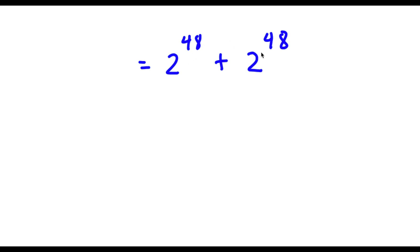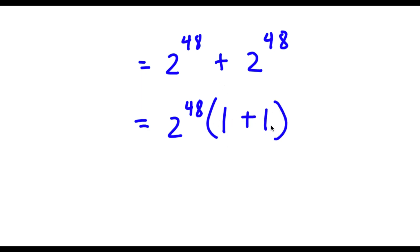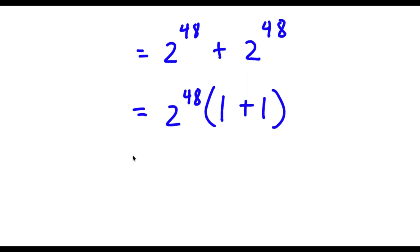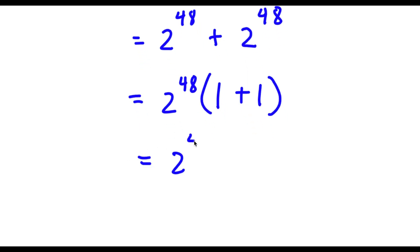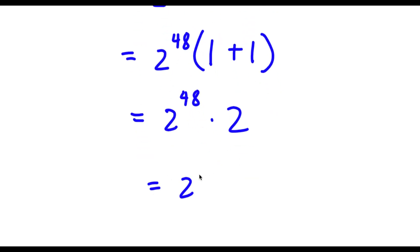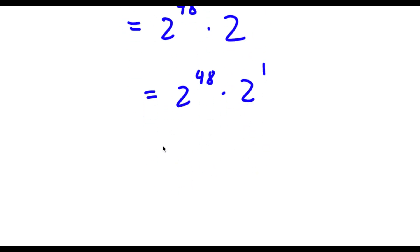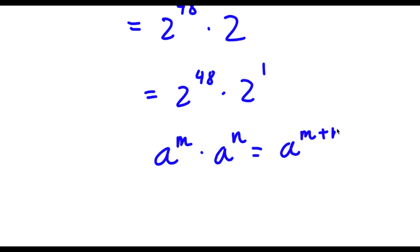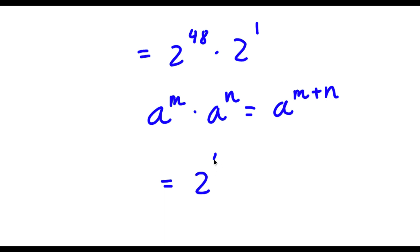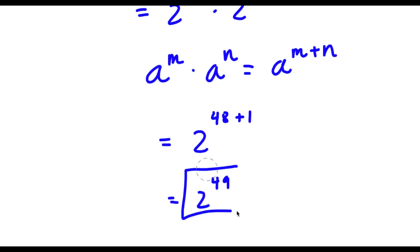Factoring out 2 to the power of 48, I get 2^48 times (1 + 1), since 2^48 divided by 2^48 is 1. Now 1 plus 1 equals 2, so I have 2 to the power of 48 times 2. Since 2 is the same as 2 to the power of 1, and using the property that a^m times a^n equals a^(m+n), I get 2 to the power of 48 plus 1, which equals 2 to the power of 49. This is my answer.